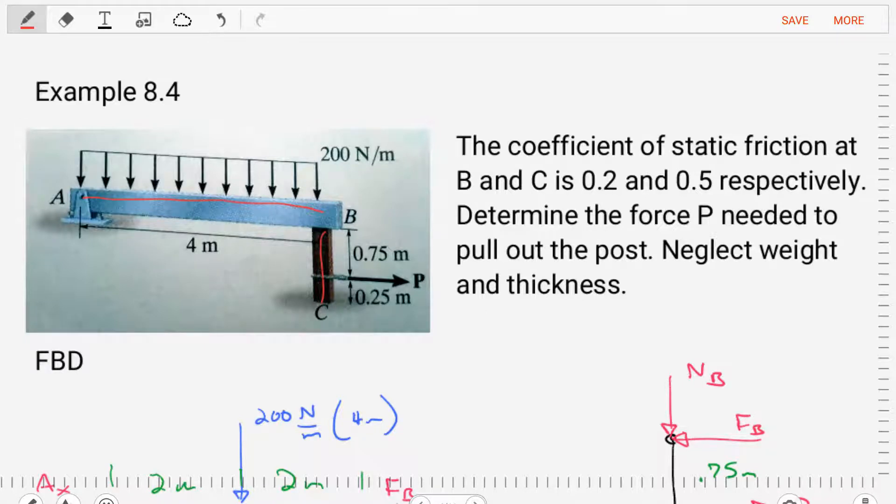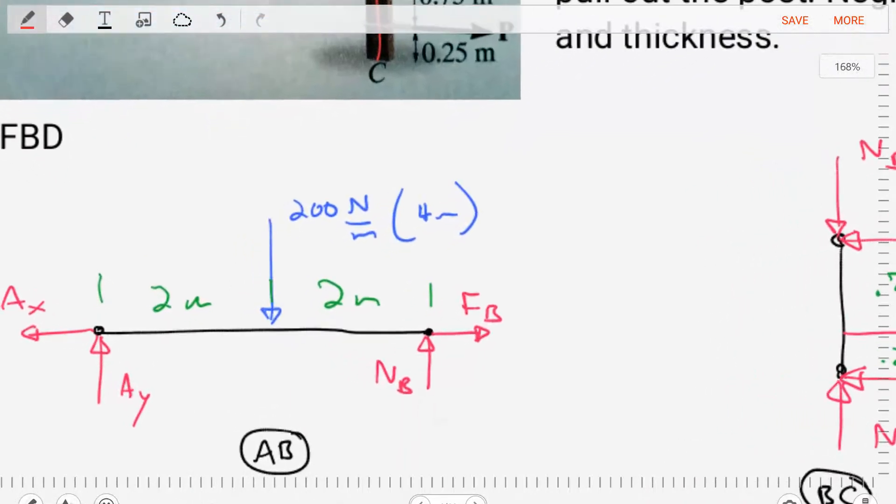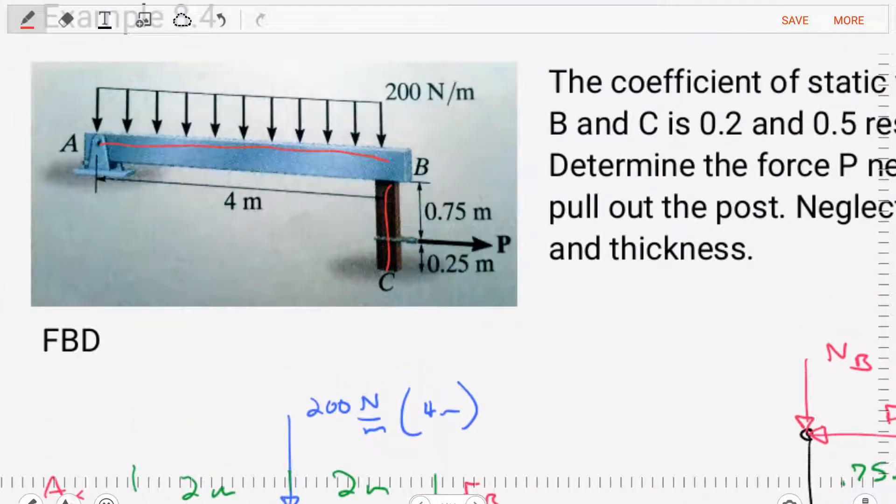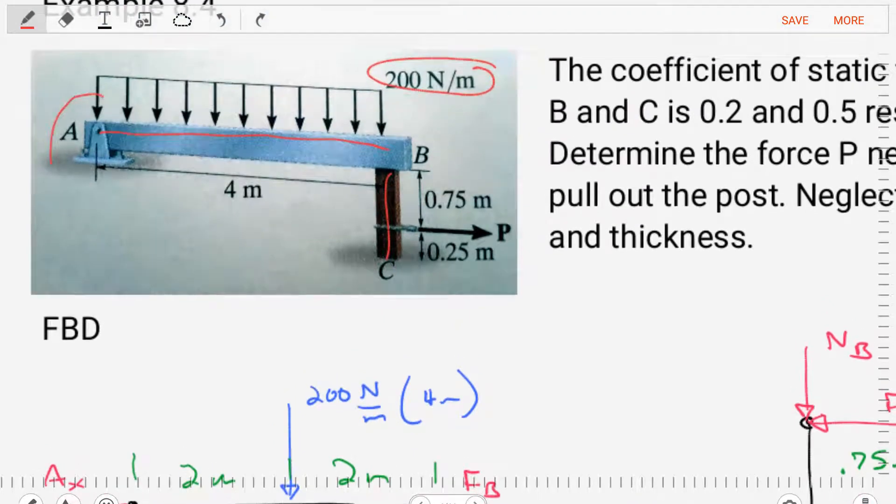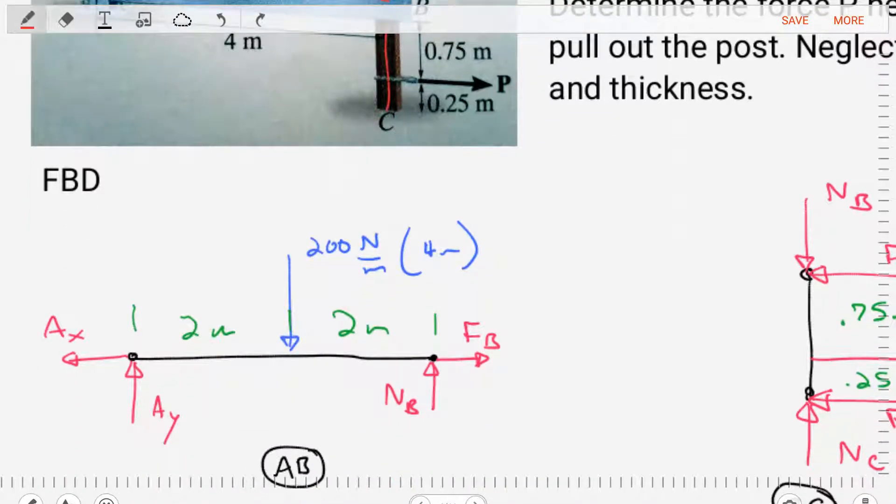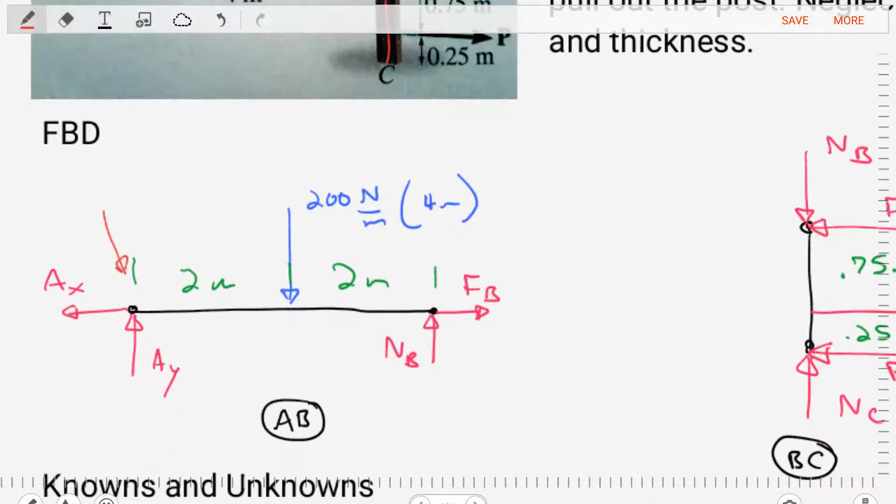Let's start with member AB. We're going to simplify that body, replacing the uniform distributed load with a single concentrated force at the center of the beam. We're also going to replace the support at A, which is a pin, and the support of the post at B with reactions. At A, the reactions are AX and AY. At B, the reactions are a normal force NB and a frictional force FB.